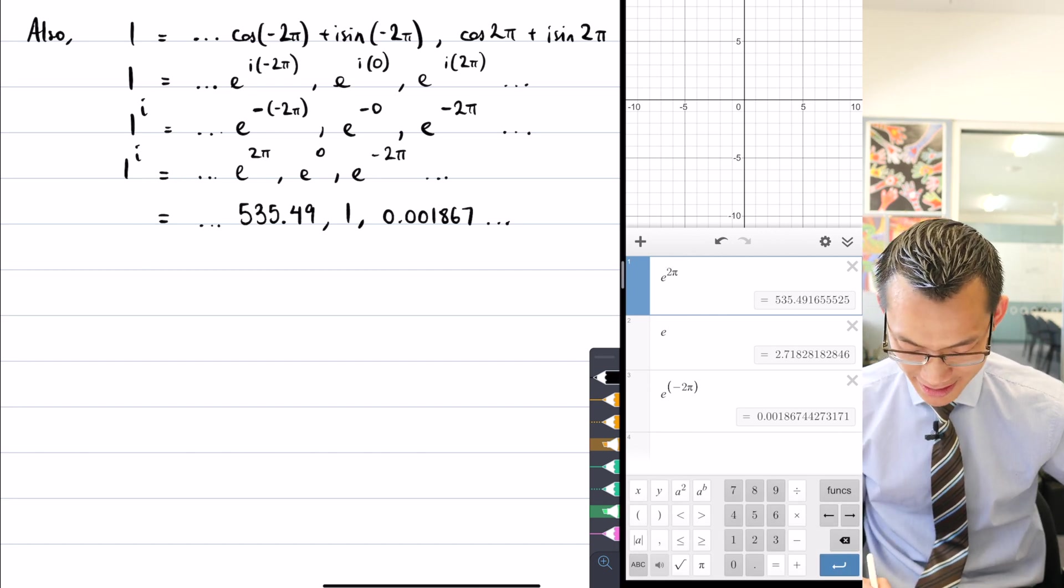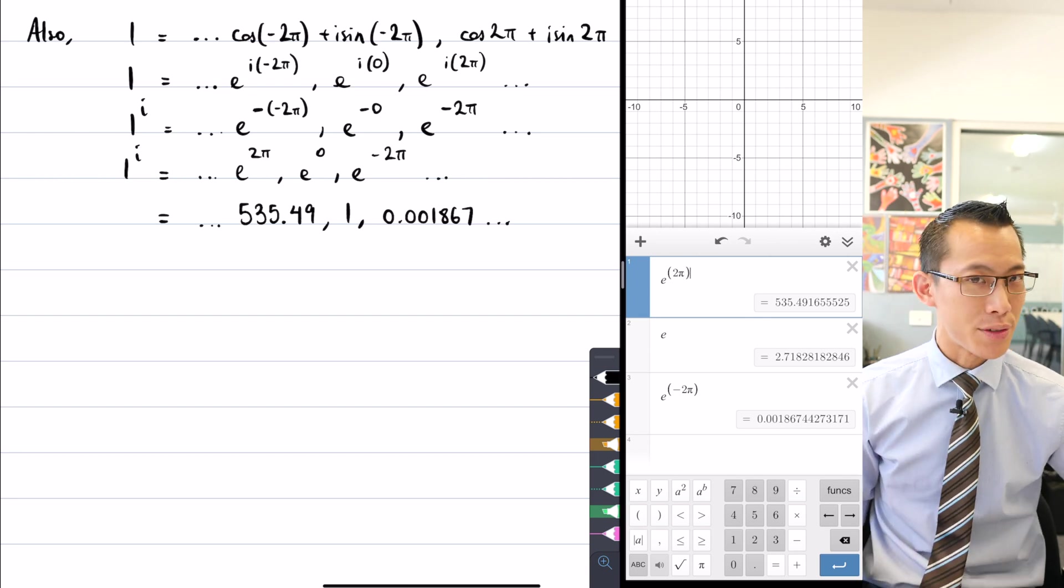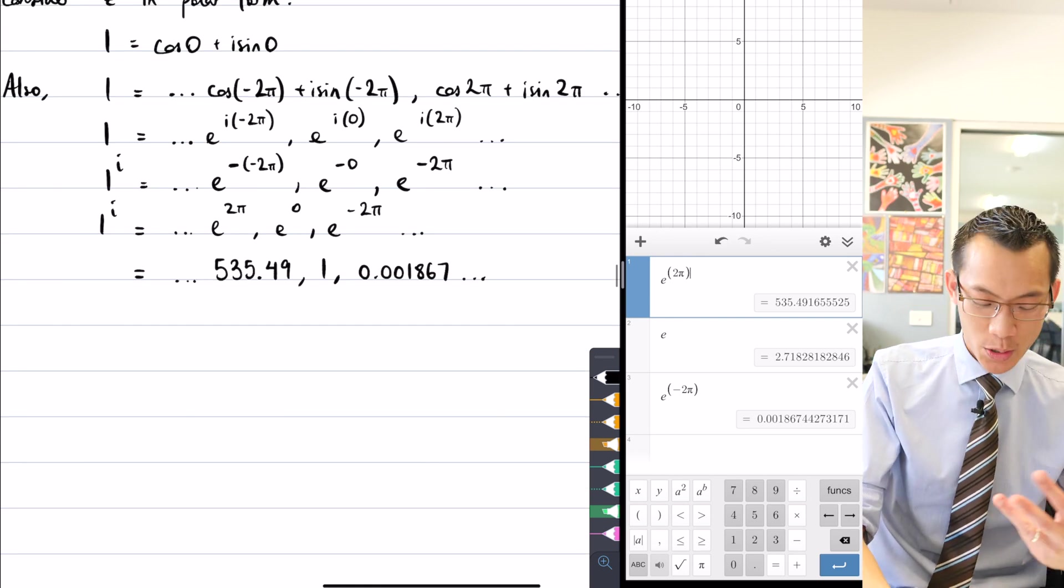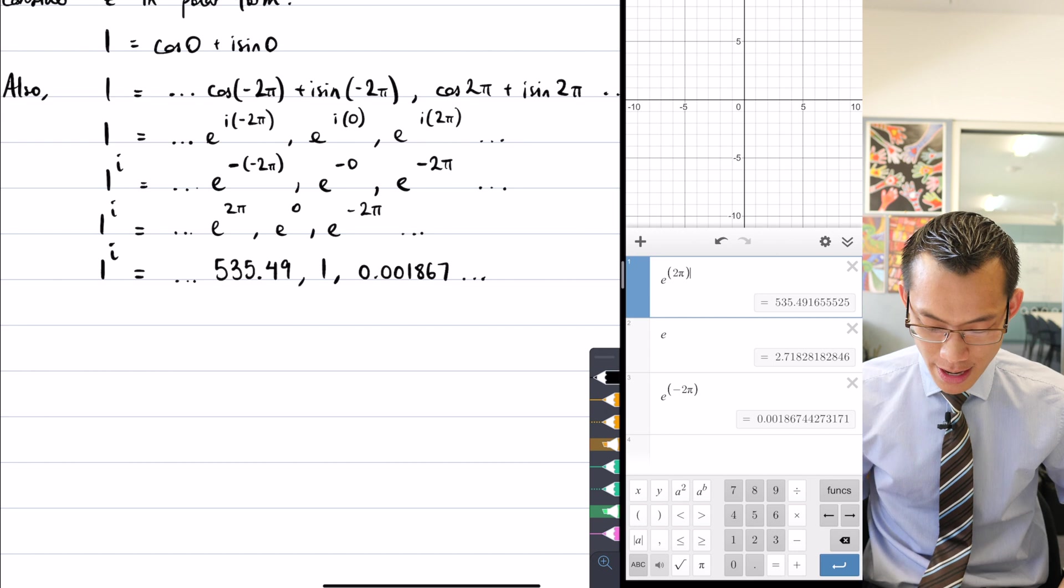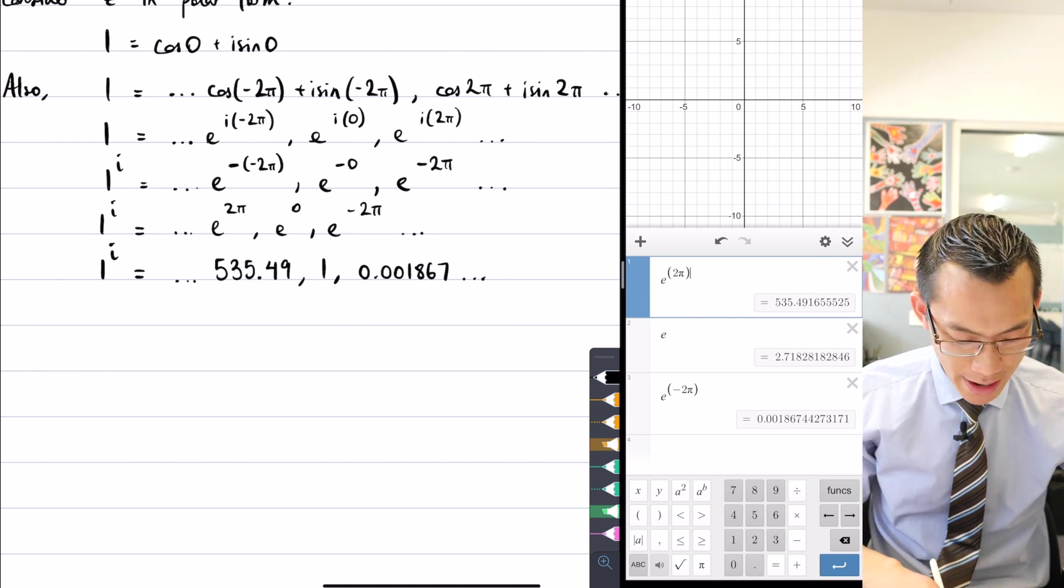So what can I say from all of this? Well, what I've got here is different values, different real numbers, that all are purporting to be equal to one to the power of i, and these are not the only ones. Not only can I go off in further integer values, I can actually say wait a second...